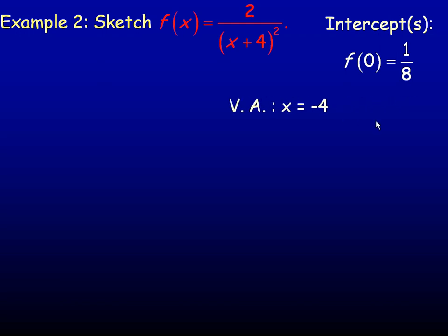There is no x-intercept. If I try to set this function equal to 0, there is no solution. The x is only in the denominator, and you can't get the function to equal 0 if the 0 comes from the denominator. So it's not possible for the function to equal 0 and hence have an x-intercept. There are no x-intercepts at all.